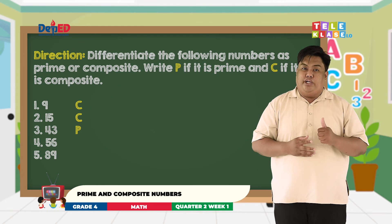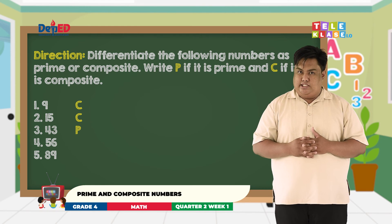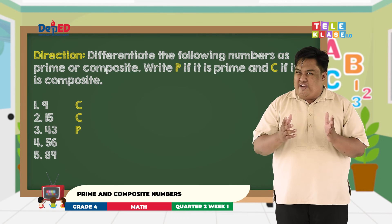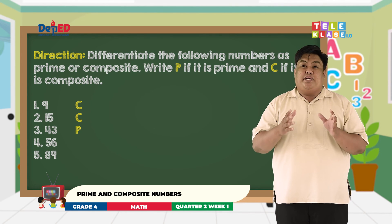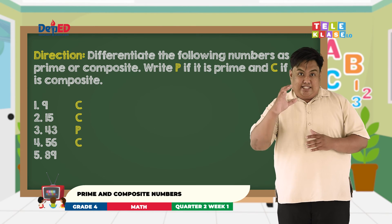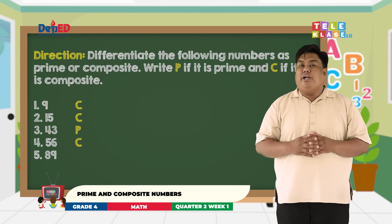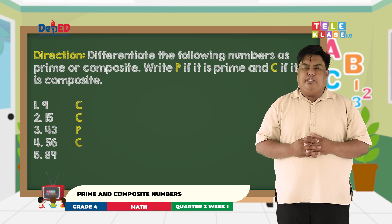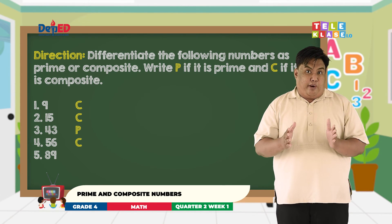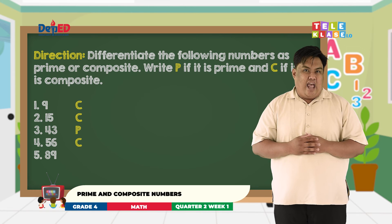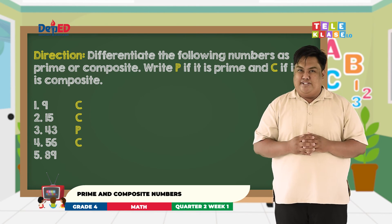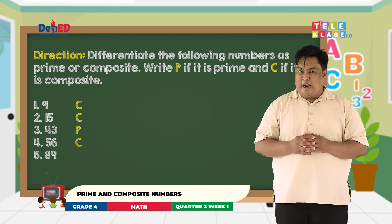Now let's go to number 4. Number 4 is 56. Is 56 a prime or composite? Very good. 56 is a composite number. Therefore, your answer should be letter C. And for our last number, number 5 is 89. Now, is 89 a prime or composite? Very good. 89 is a prime number. So our answer is letter P.